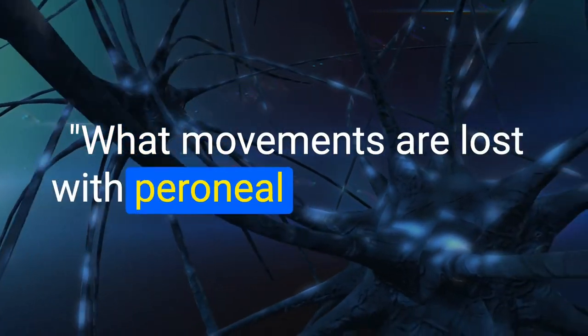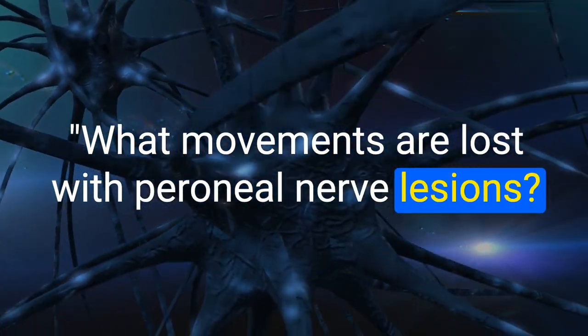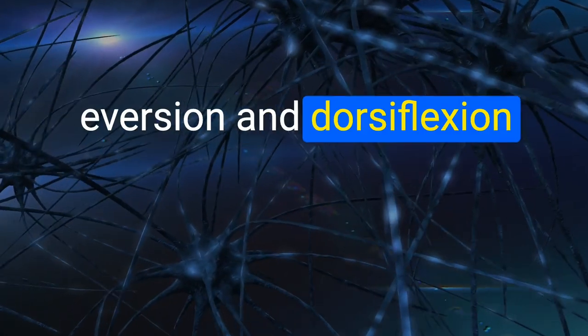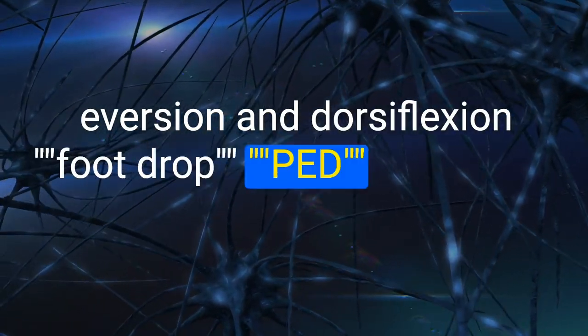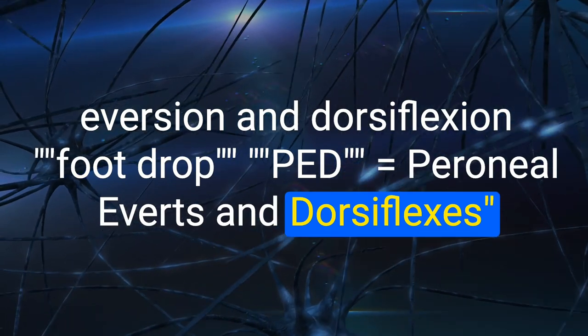29. What movements are lost with peroneal nerve lesions? Eversion and dorsiflexion — foot drop. Mnemonic: PAD = Peroneal Everts and Dorsiflexes.